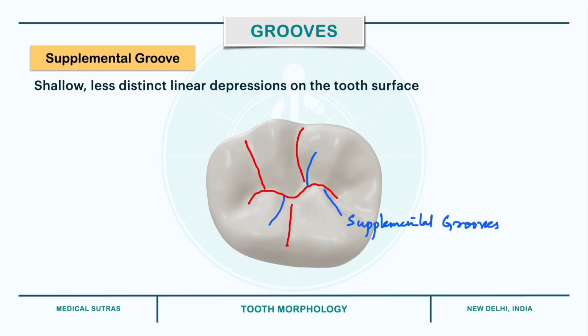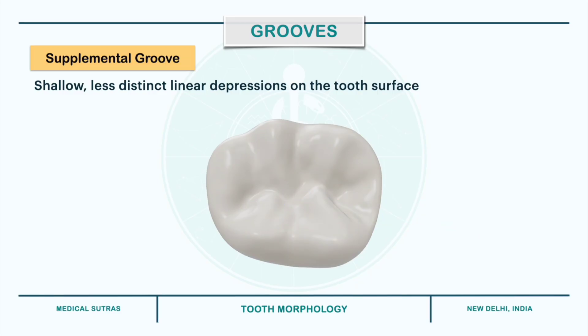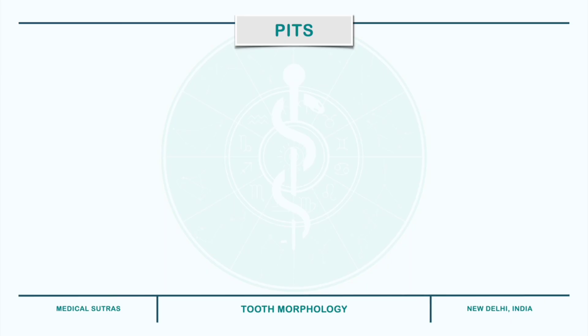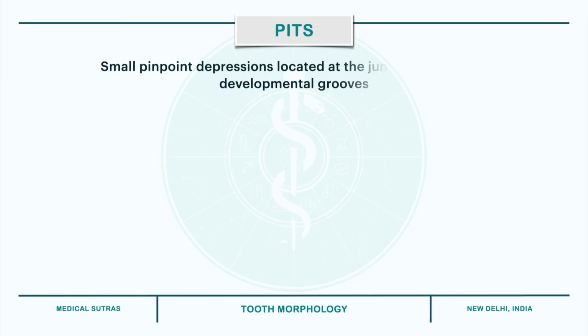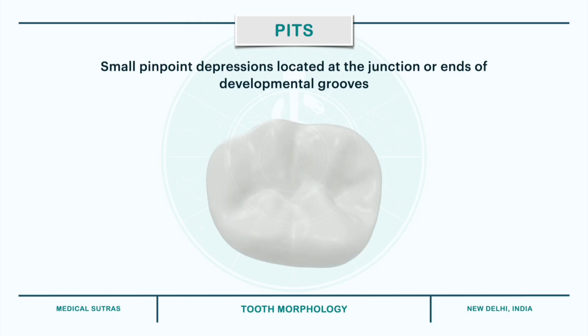Next we have pits. Pits are small pinpoint depressions located at the junction or at the end of the developmental groove. For example, in the lower first molar we have a central pit at which different developmental grooves meet.